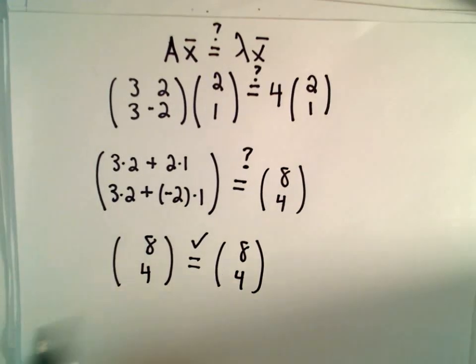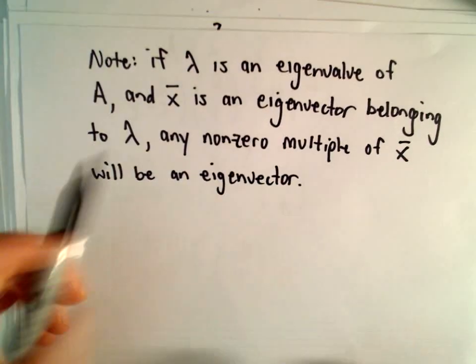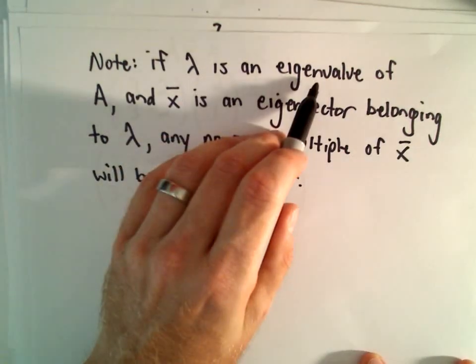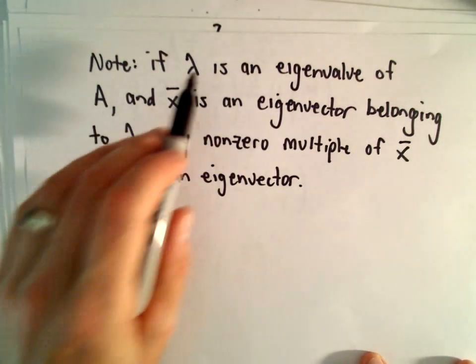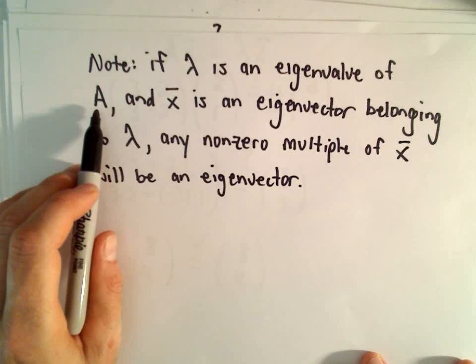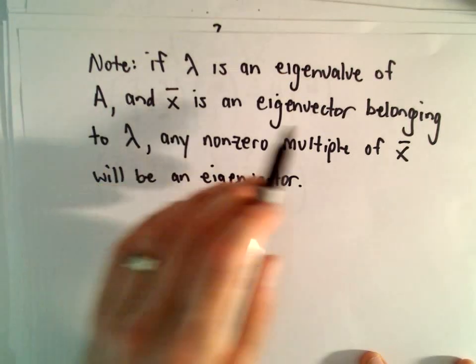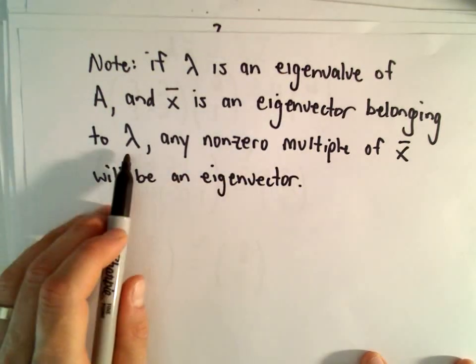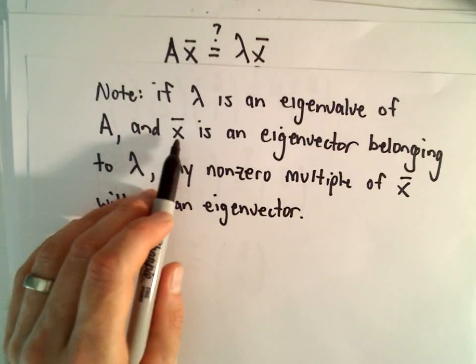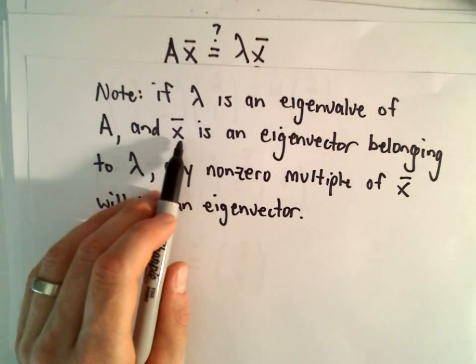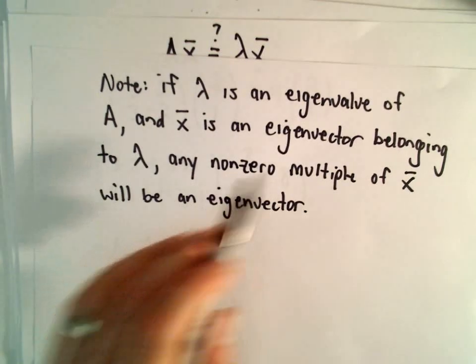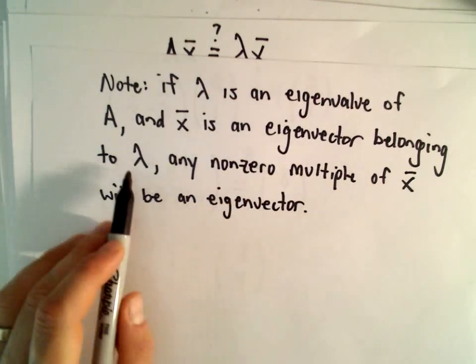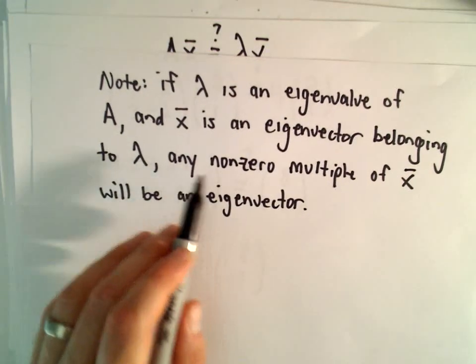Okay, so one other little remark here. If λ is an eigenvalue of A, so we had 4 was an eigenvalue of our matrix A, and x is an eigenvector belonging to λ - so our eigenvector was the vector with entries 2 and 1 that corresponded to the eigenvalue of 4.